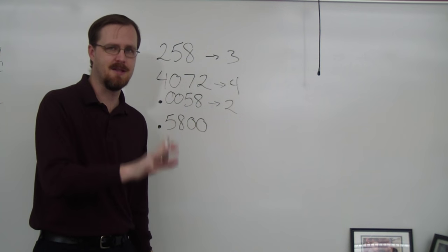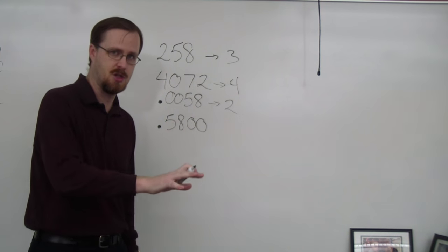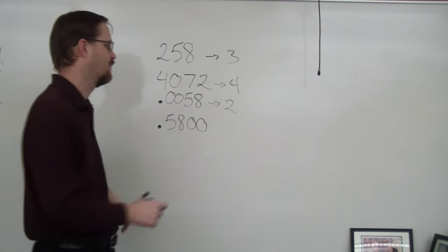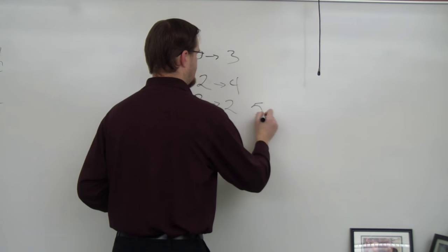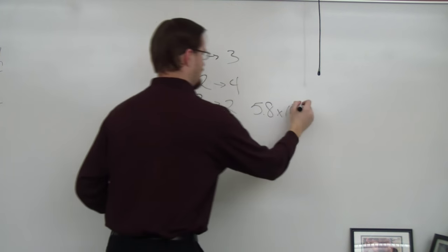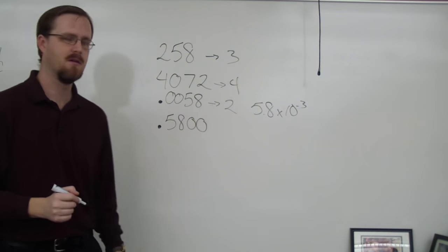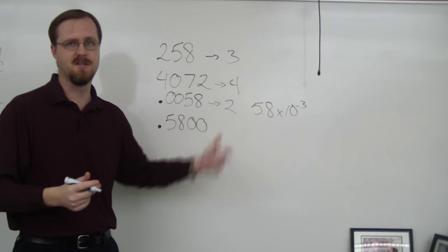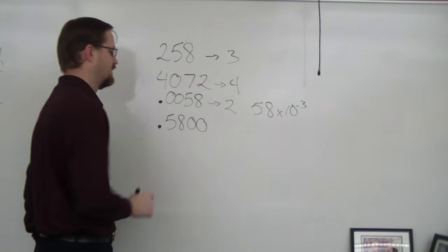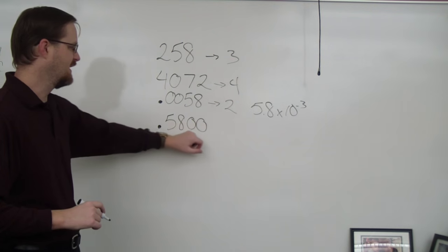Remember, this is about a scientific approach to this. The reason why these two zeros don't count is because I could rewrite this number in scientific notation as 5.8 times 10 to the negative third power. And notice how those zeros disappear. So that's why they don't count as sig figs. So there are only two sig figs in this number.